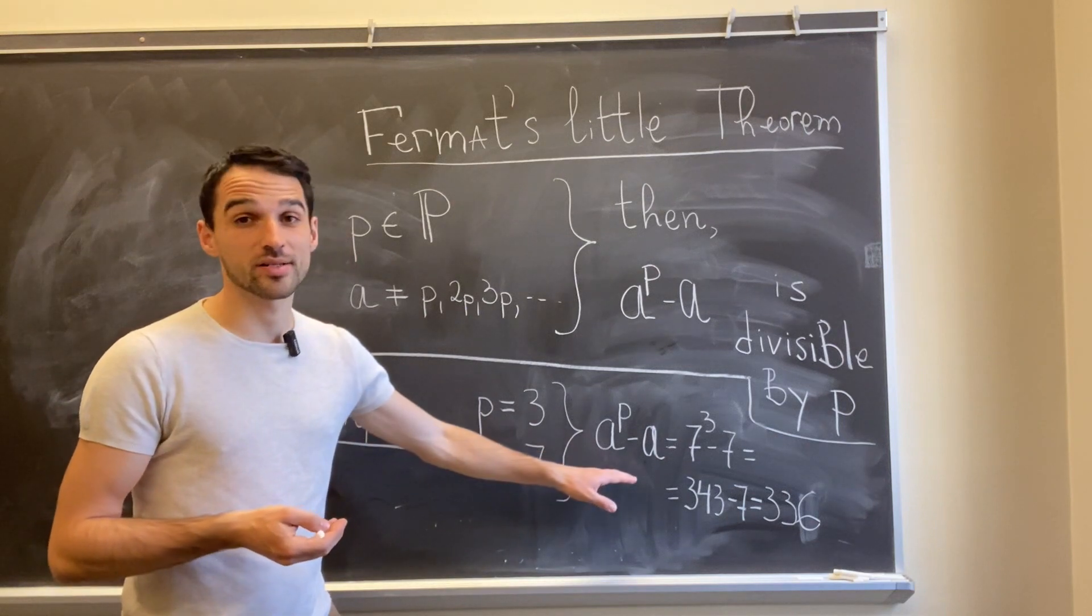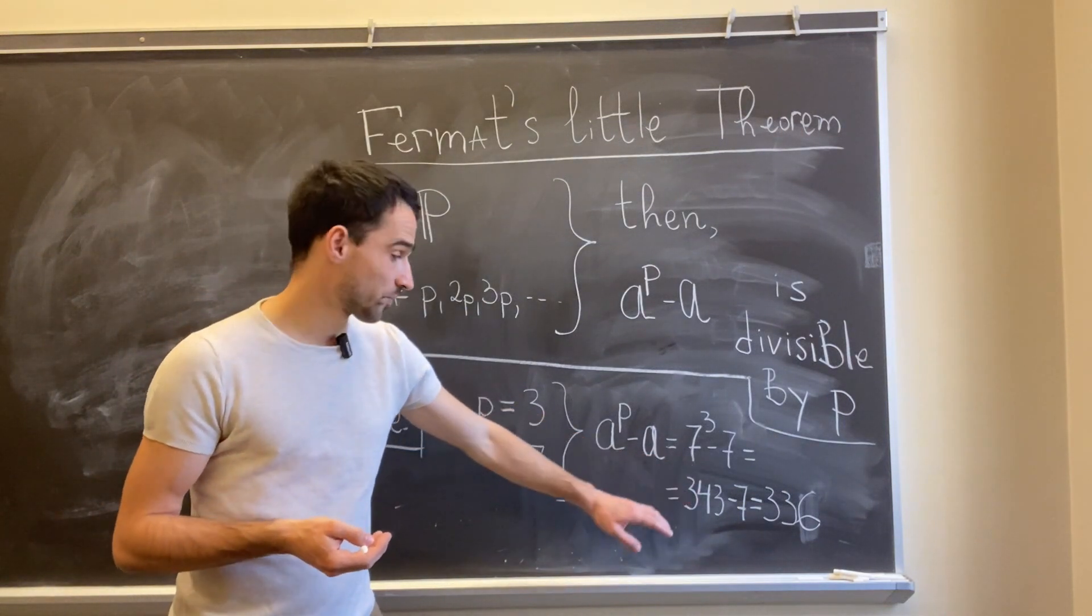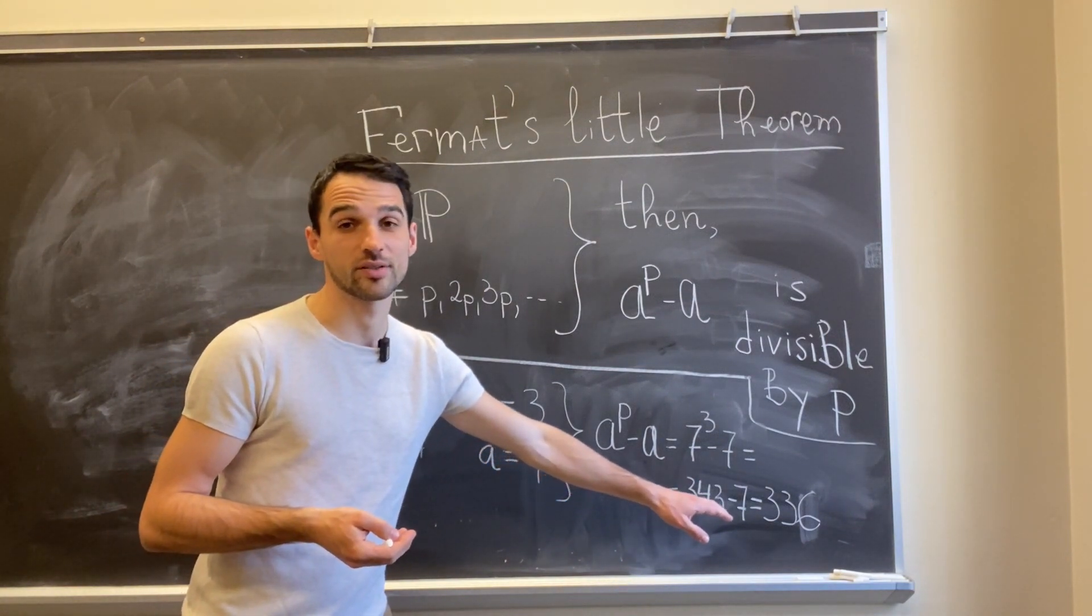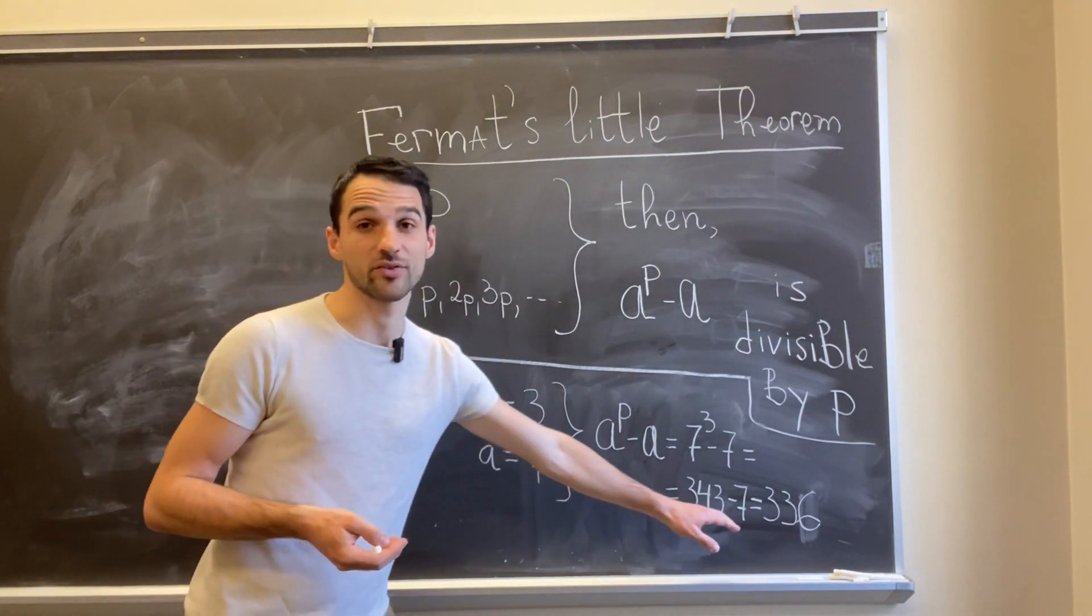Then a to the power p minus a is just 7 to the power 3 minus 7. And this is 343 minus 7, or 336. And of course, 3 divides 336.